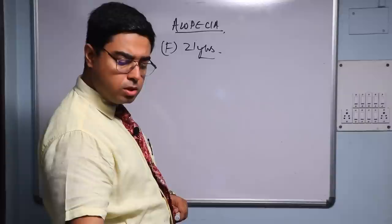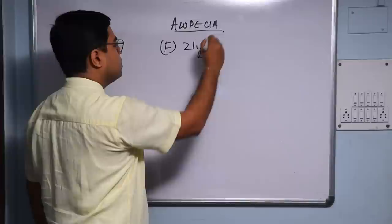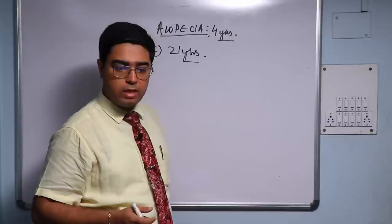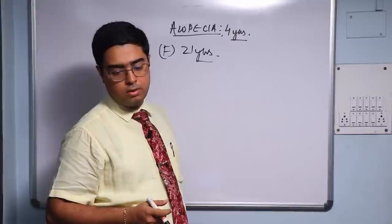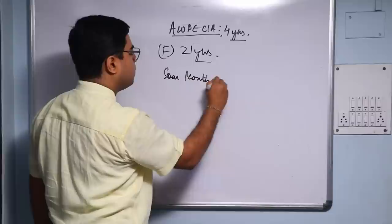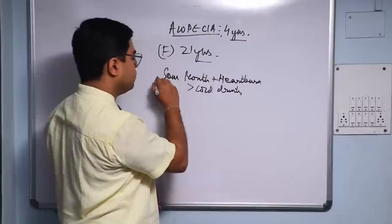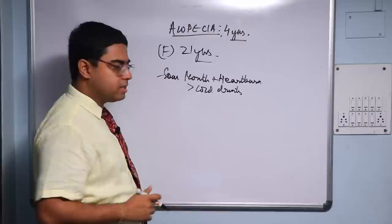She is a student and her main complaint is alopecia which has been there since the last four years. As we have seen in the picture, the alopecia has been quite extensive all over. Other symptoms included sour mouth and heartburn, better by cold drinks, worse from fasting, better from eating.